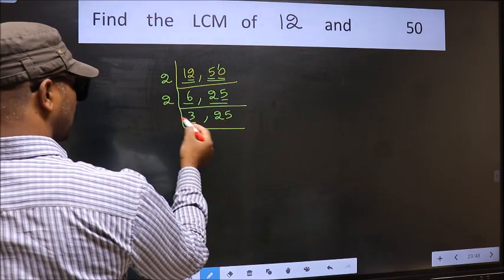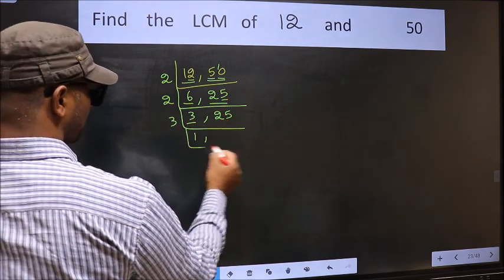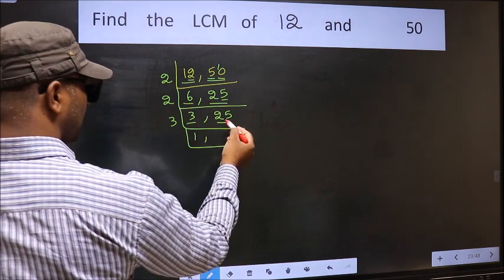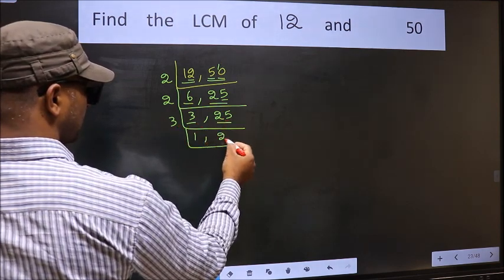Now here we have 3. 3 is a prime number, so 3 times 1 is 3. The other number 25, not divisible by 3, so we write it down as it is.